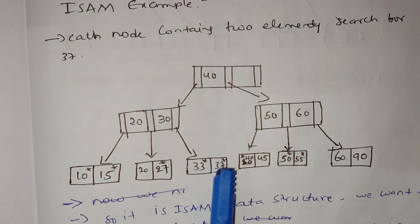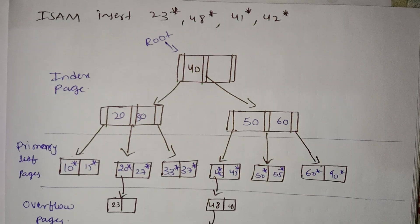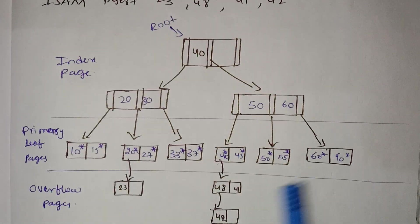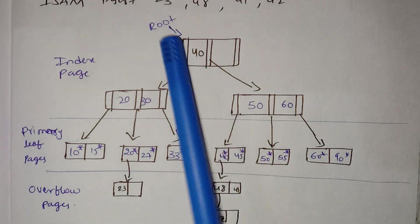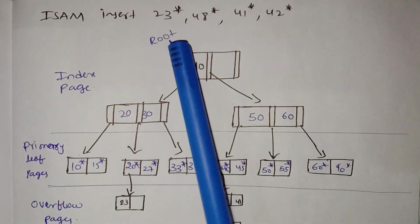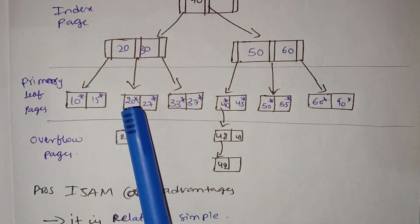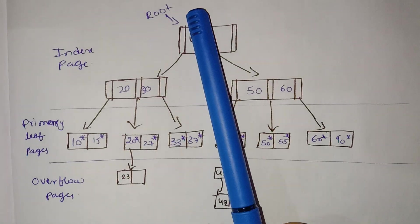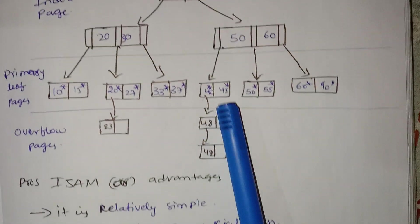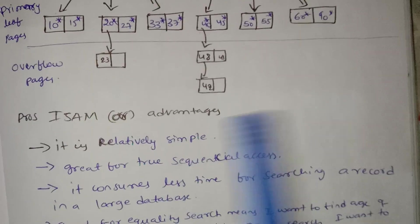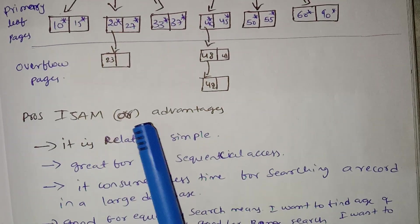So 37 equals 37, the search is successful. Now regarding overflow pages: we insert a page into the overflow area. Here we have values like 48 and 41 being added to overflow pages.